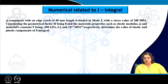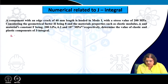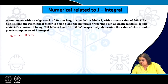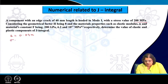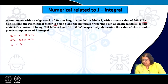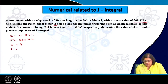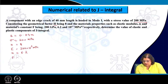Here is a numerical example: a component with an edge crack of 40 millimeter length (a = 0.04 m) is loaded in Mode I with a stress of 200 MPa. The geometric factor Y = 1.12 (for an edge crack), elastic modulus E = 200 GPa (200×10³ MPa), n = 6.2, and F = 10¹⁷ MPa^6.2.